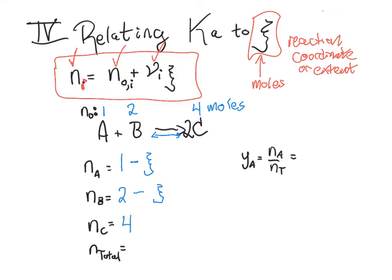And then C started with four moles and its stoichiometric coefficient is positive two. And if we look at that all together, our total number of moles in the system at any given time is 4 + 2 + 1 = 7. And then it's a plus two and a minus two. I picked a great example. So it's 7 plus zero ξ. The number of moles in the system is always seven basically.